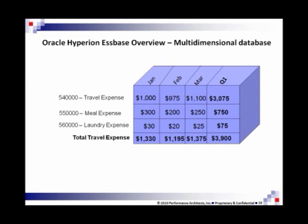What separates this technology from a spreadsheet is obviously the depth, or the third dimension. So if we add another slice or add some depth to it, you can see now that we're looking at my actual first quarter total travel expenses of $3,900, and I also might have budgeted travel expenses for the first quarter — let's say about $4,000. So now I'm really starting to turn this data into information, and that's what this is all about.